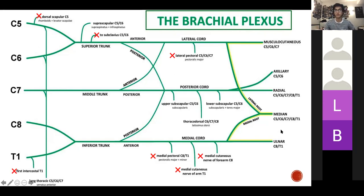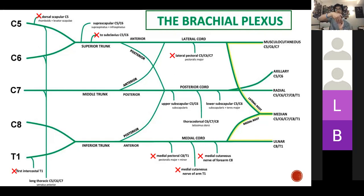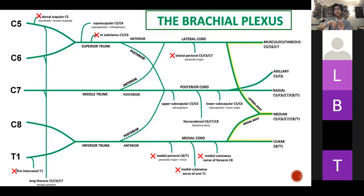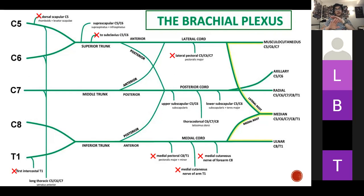One thing you probably didn't get full appreciation of without specimens in person is that the cords are named because of their relation to the axillary artery. When you open up an arm and look at the axillary artery running down, you've got your posterior cord behind it, your medial cord to the medial side, and your lateral cord to the lateral side. That's different from your trunks, which are superior, middle, and inferior in the same plane.